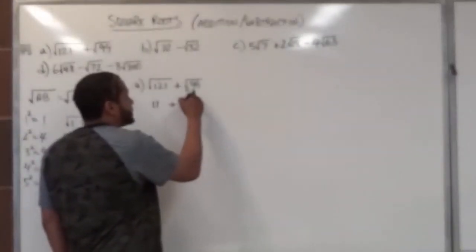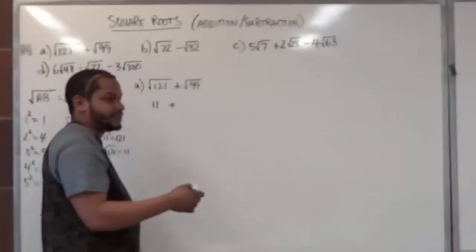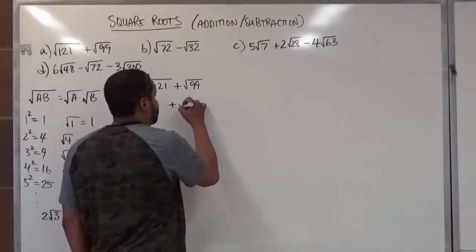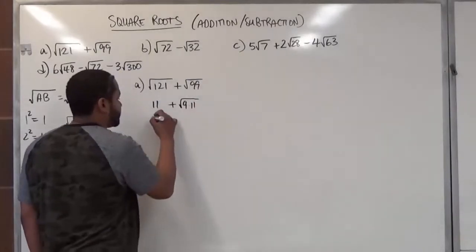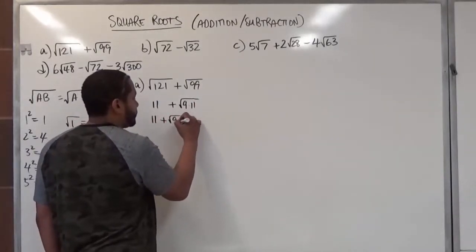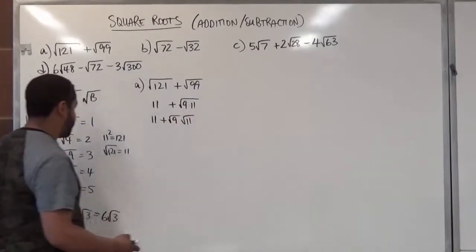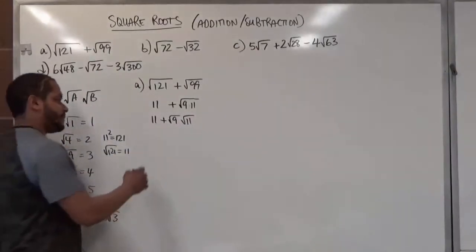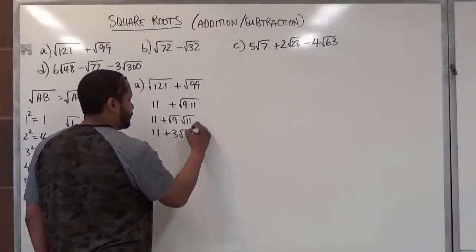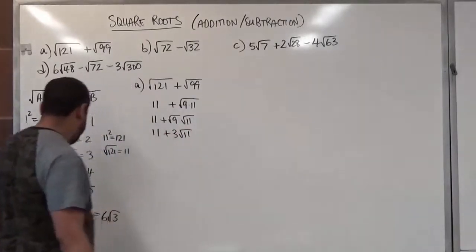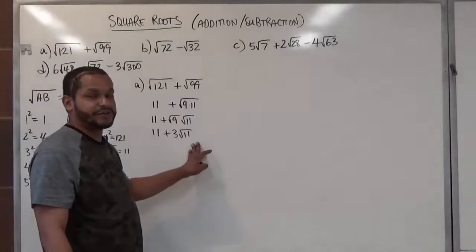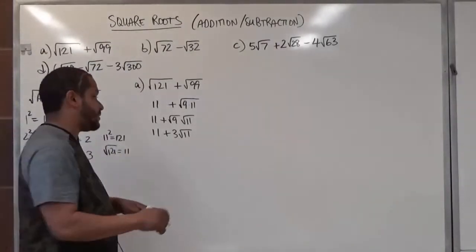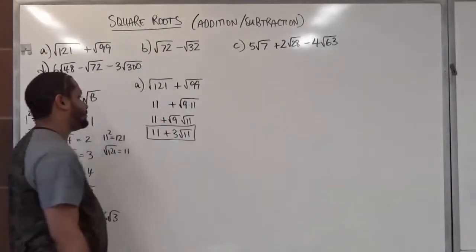Meanwhile, 99 is the product of 9 times 11. So we have the square root of 9 times the square root of 11, which gives us 11 plus 3 radical 11s, because the square root of 9 is just 3. Now, 11 and 3 radical 11 are not the same kind of object, so we cannot combine them — this is our final answer: 11 plus 3 radical 11.